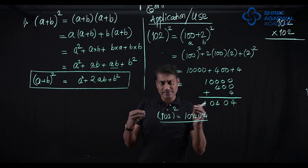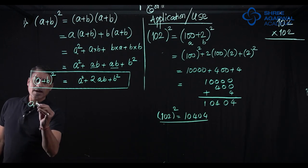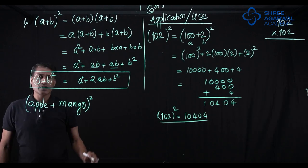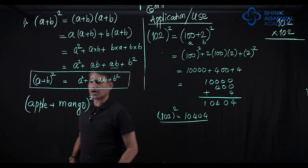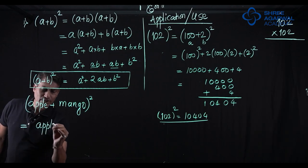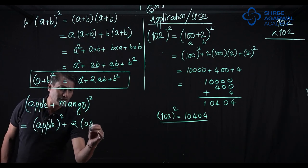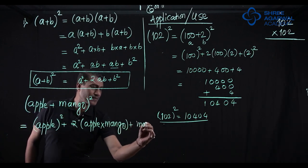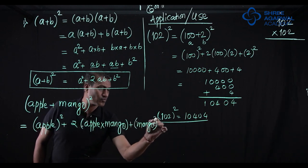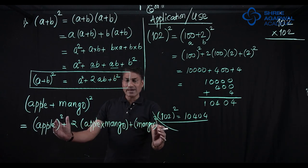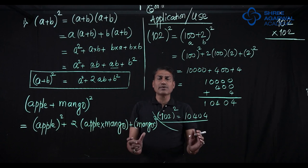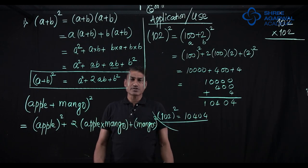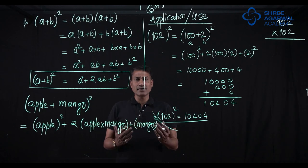I will put it in a simpler way to remember. Suppose we have apple plus mango bracket square, apple plus mango bracket square means what? This is equal to apple square plus 2 times apple into mango plus mango square. This is the way in which we can remember it. I hope this is clear to you. Learn it again.